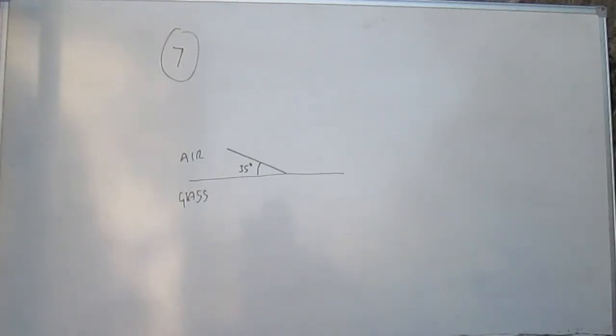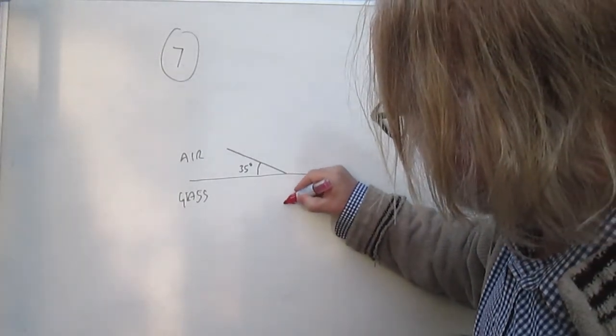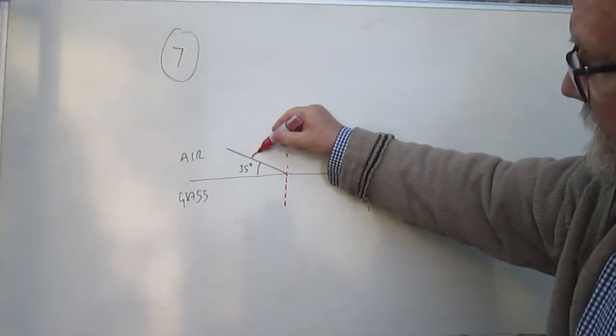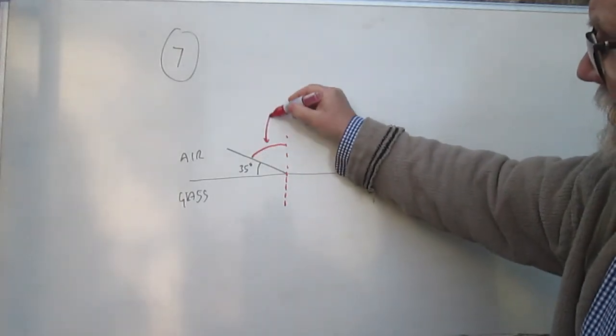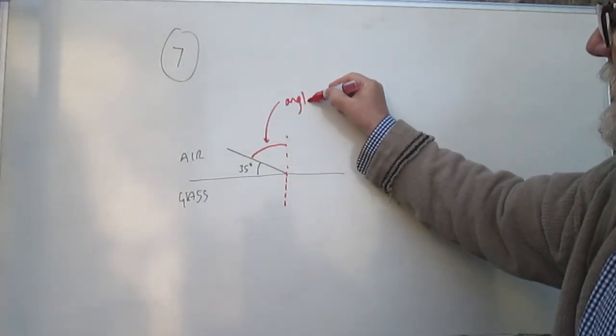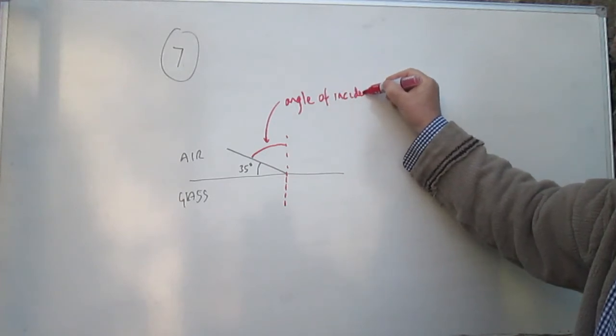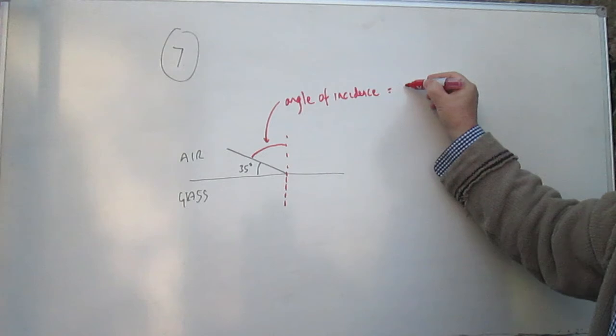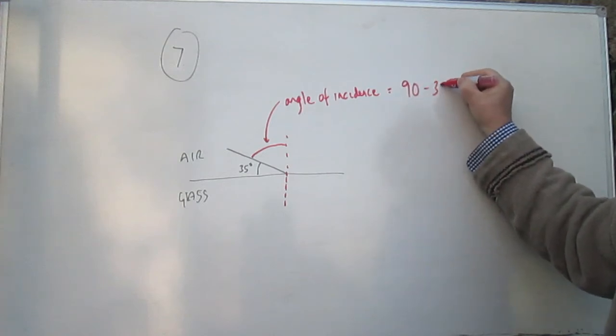In question seven, we've got this situation, and it wants to know the angle of refraction in the glass. So remember, this is all about putting on the normal, as always in these refraction questions. So there's the normal, perpendicular to the plane of the interface. And so the angle of incidence is that angle, which is the light coming in, and that's 90 minus 35, is 55 degrees.